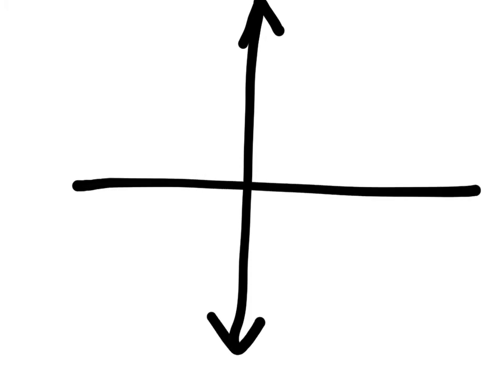Graphing is extremely important because you do a ton of it after this. When we look at a graph, you'll usually start out with this big line like this and another one like this. They'll be labeled — you'll have an X there and a Y there. What that means is that this vertical one right here, that's your Y axis.